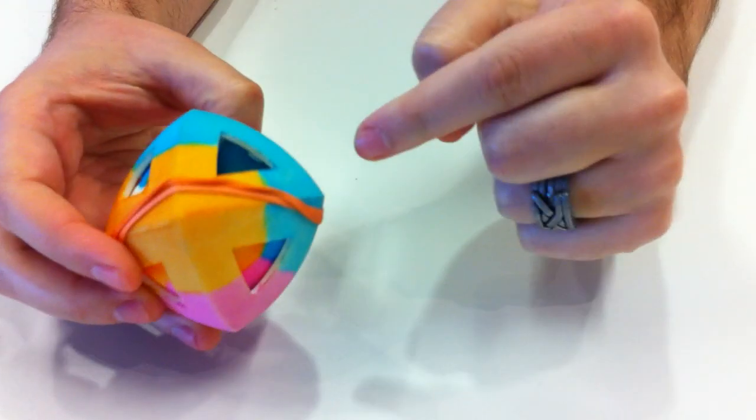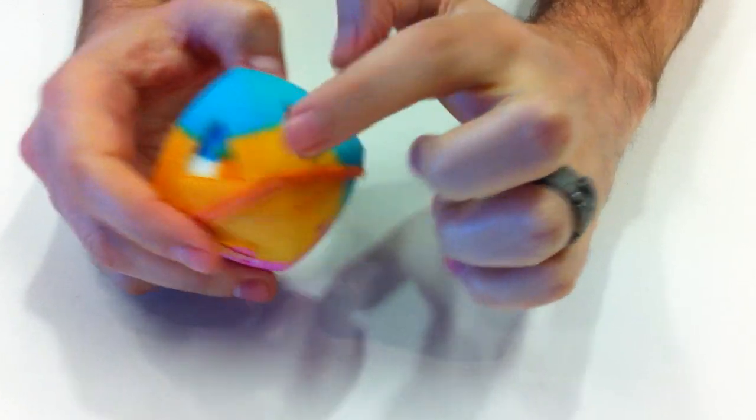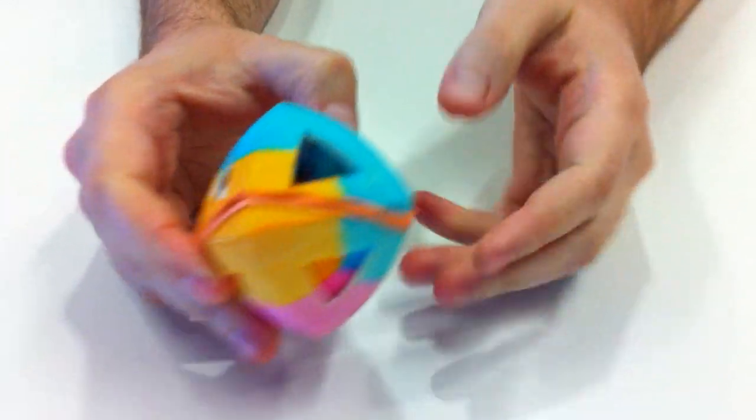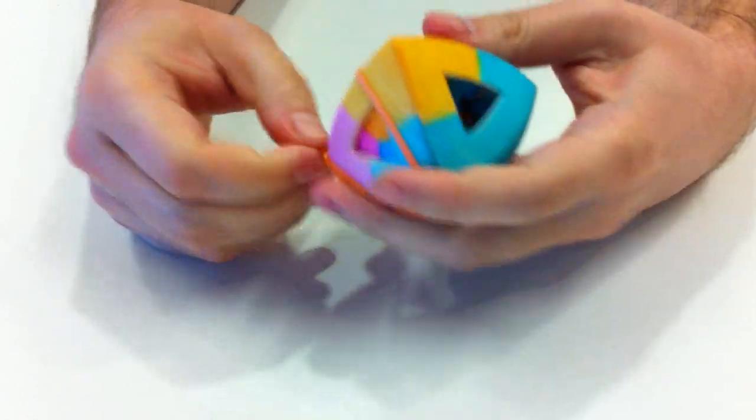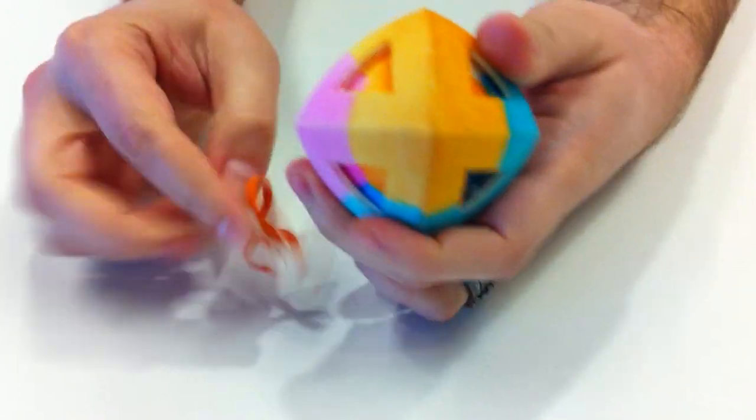It's not obvious what's going on here, but these are actually tetrahedra which all meet at one point in the middle. And I did not glue this together, I pulled it together with rubber bands, so I can take it apart and show you.